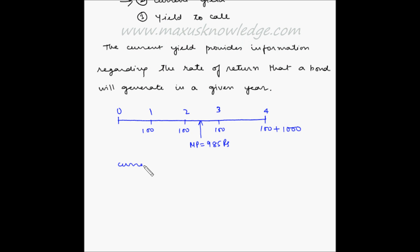The current yield in this case will be equal to 100, that is the interest, divided by 985, which is the market price or the investment that the investor is making. This will be equal to 0.1015, or in percentage terms, 10.15%.